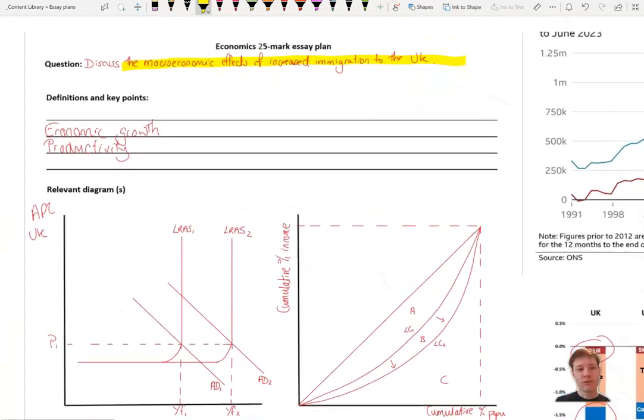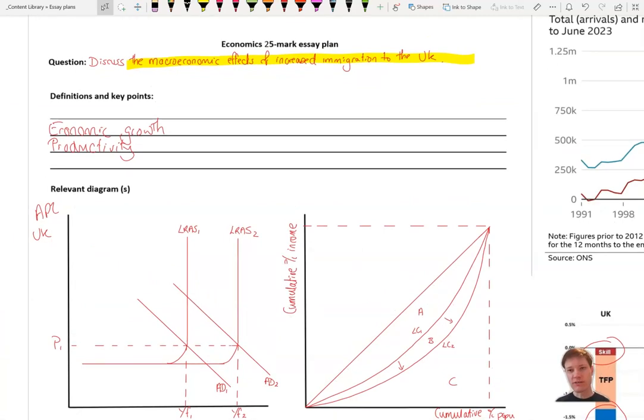Right, let's have a look then at how we can structure this. So that's the data. Definition key point, I would certainly define economic growth and productivity. And we're going to use growth and inequality as our two points. Now, what I'd like you to do is pause the video, try on rough paper to plan out how you would go about doing that. Remember that long-term memory, if you're writing it out, if you're trying to summarize, it actually aids memory rather than just copying out what I'm saying. So do try and plan and then compare what I've said to what you said.